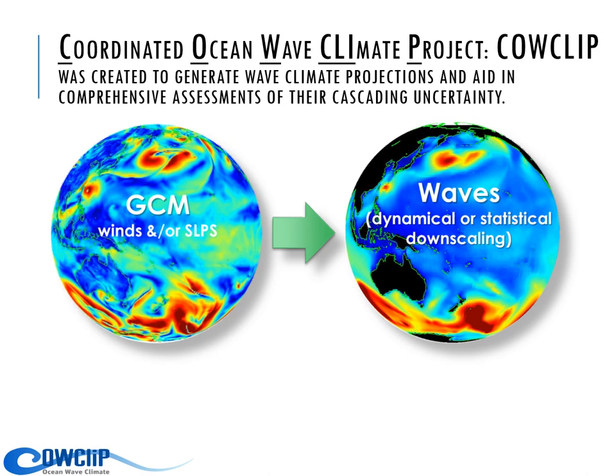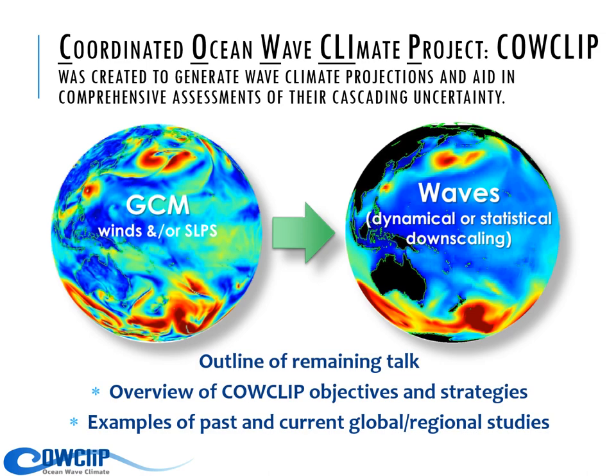To project wave climate, we use sea surface wind U10 or sea level pressures depending on the model. We try to increase the number of input global climate model outputs and also want to increase the ensemble of the wave climate projections. Today I'm going to talk about our latest results for IPCC AR6.